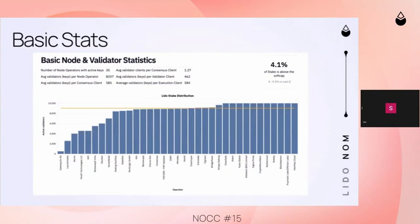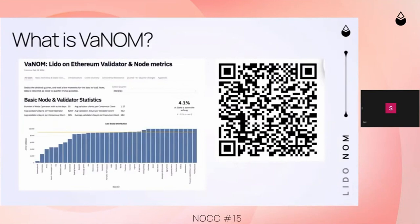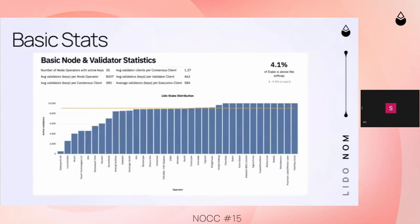I'm going to take you through most of the components — not all the details. I showed the QR link where you can follow along; that's the public site, you can play around with it. Starting with the basic stats: we have 35 node operators.